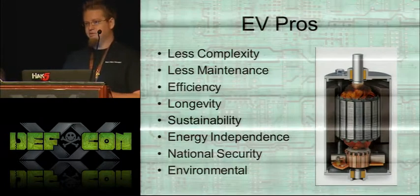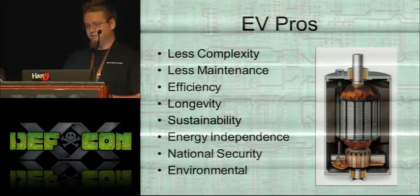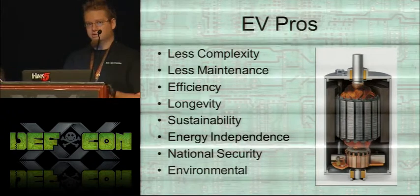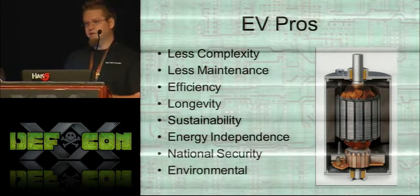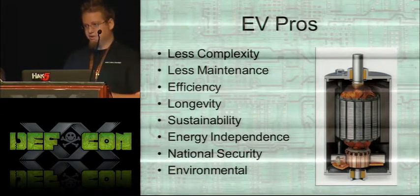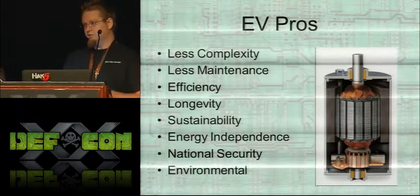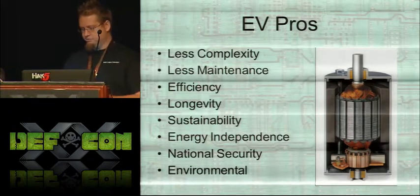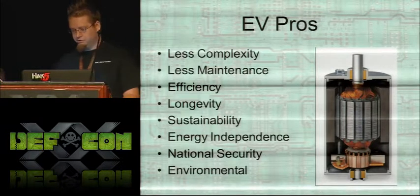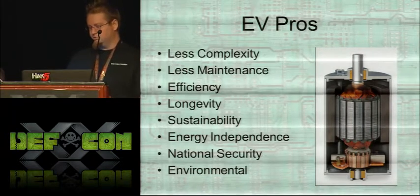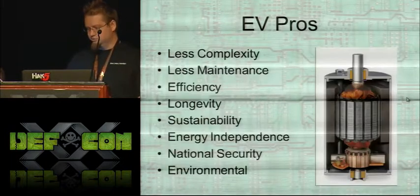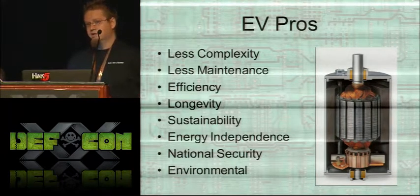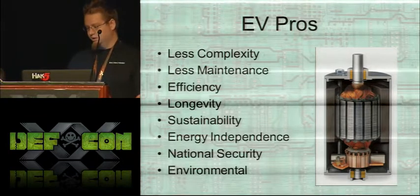EV pros: the best things about them are they're less complex, less maintenance, more efficient, they last longer. It's more sustainable because you're using electricity that can be generated in dozens of different ways, leading to energy independence — many EV drivers also have solar panels and are completely self-sustained. Also national security: if everyone drove electric cars we wouldn't need oil from the Middle East. This is a picture of an electric motor, the heart of an electric car. There are only a few moving parts — only the bearings and brushes wear. Bearings are good for about 250,000 miles, brushes last 100,000 to 200,000 miles and can be replaced in about five minutes, so it's really easy, low-cost, long-term maintenance.